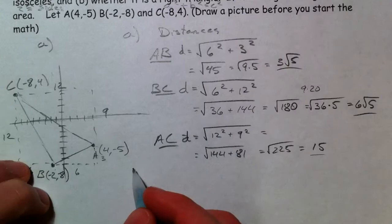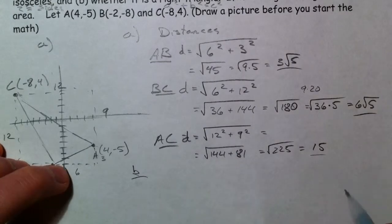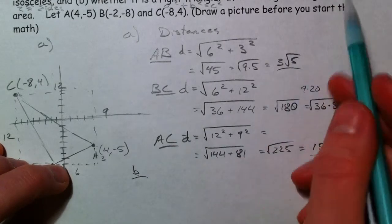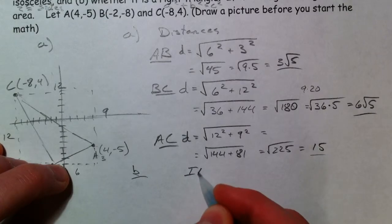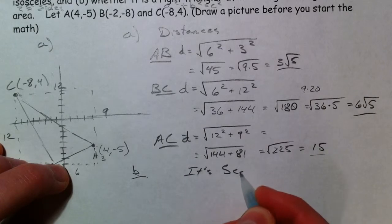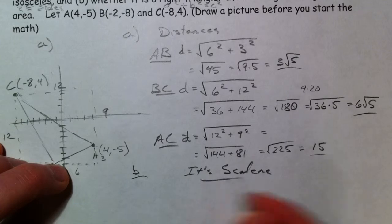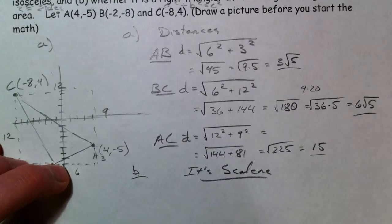So determine whether it's isosceles. It's scalene, actually. All sides are different. Part B, is it a right triangle?